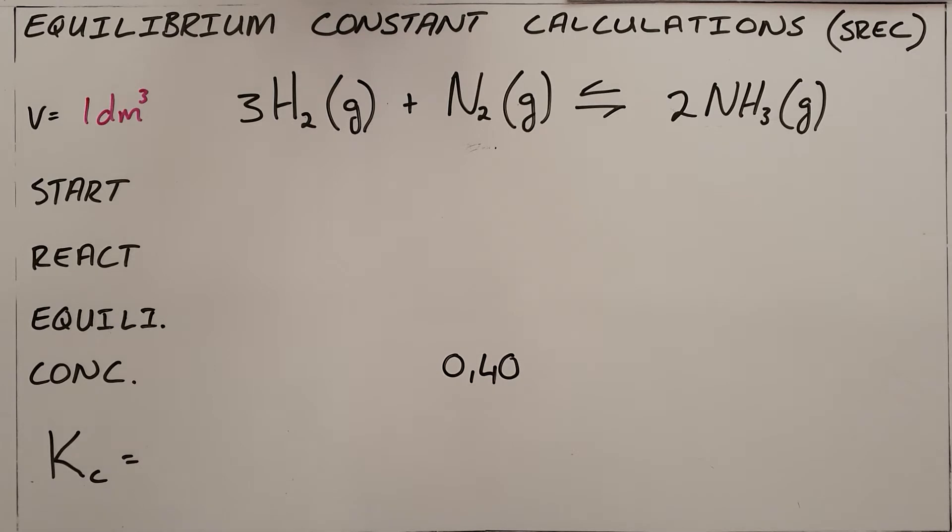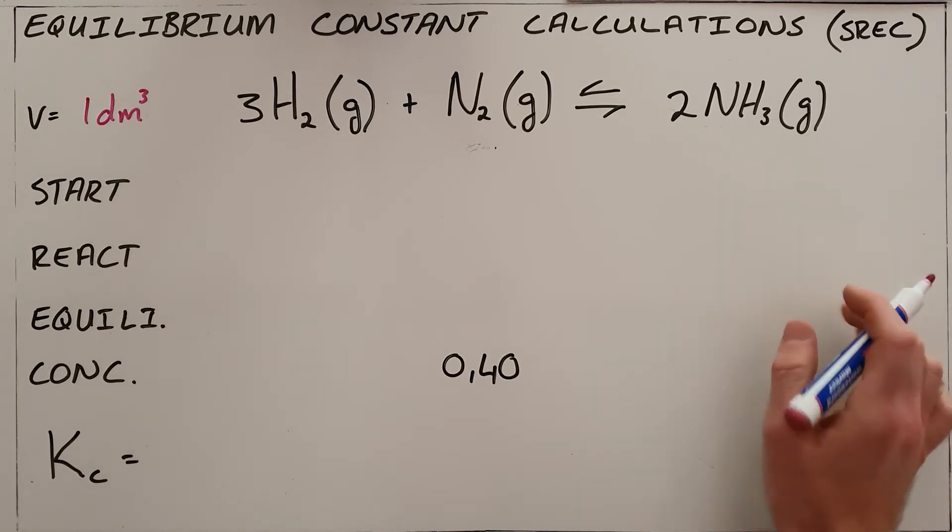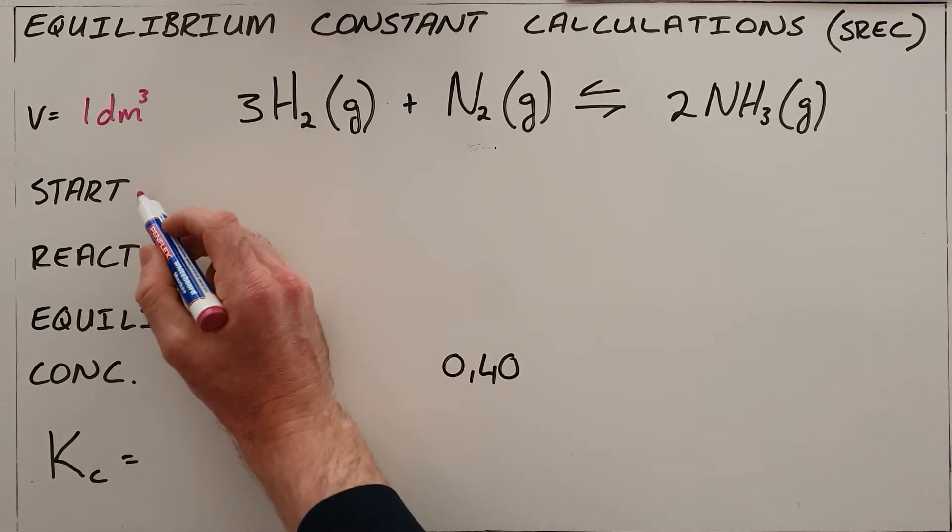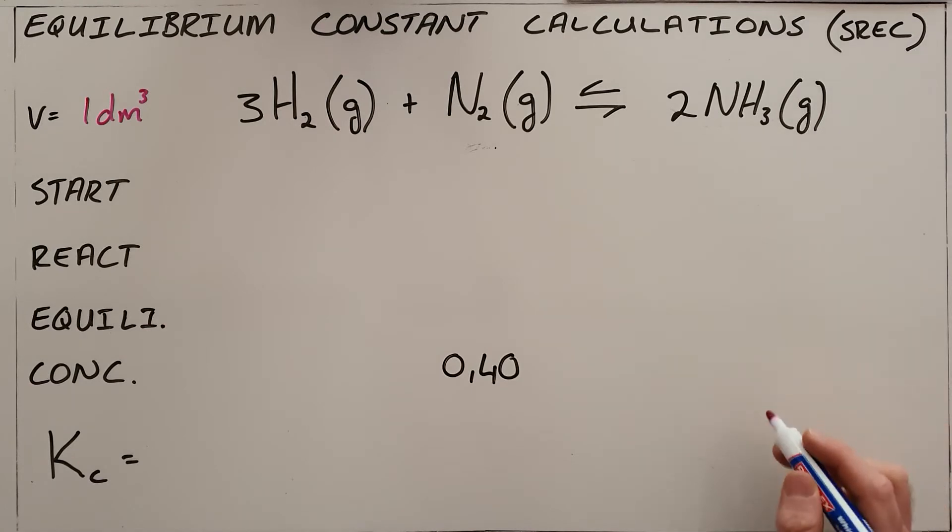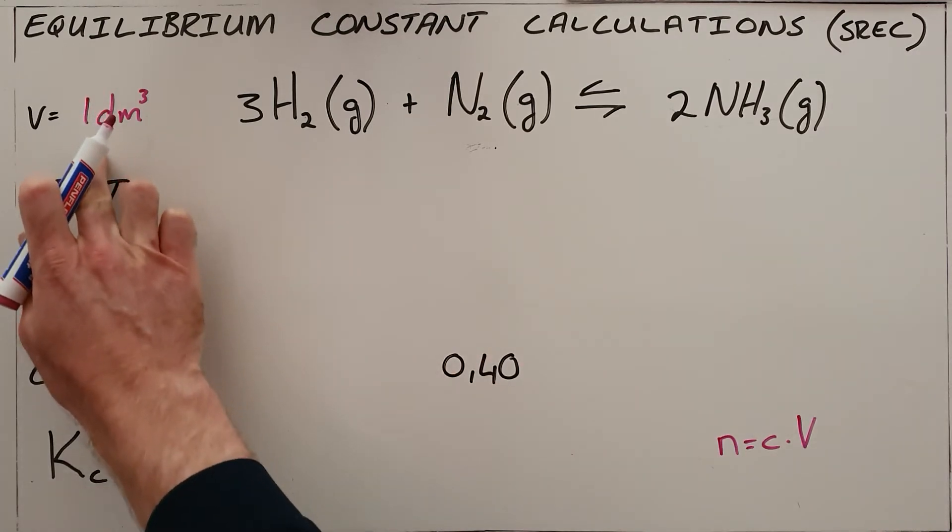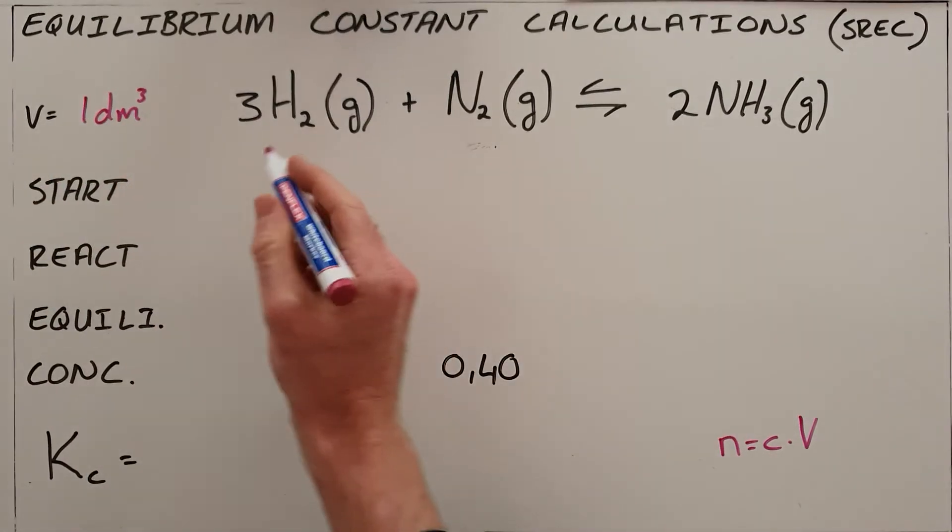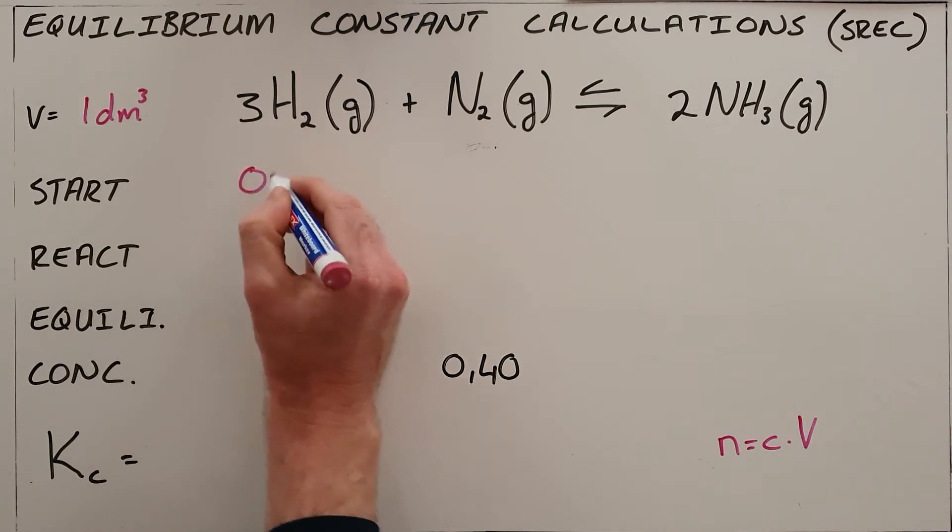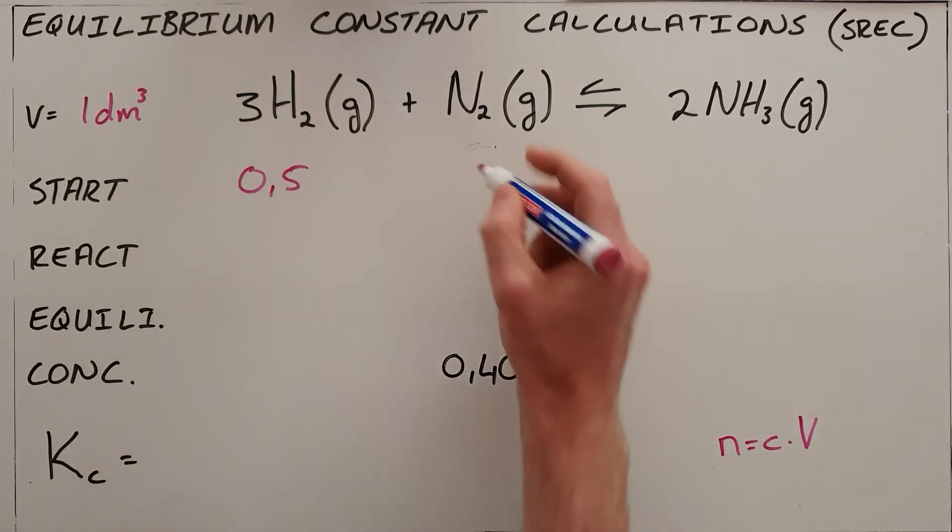Then this question reads: at a certain temperature, solutions of nitrogen, hydrogen, and ammonia, each with concentrations of 0.5 molar, are placed in a sealed container. What that tells us is that since the concentration is 0.5 molar and we know that number of moles is equal to concentration times volume, and since we've selected an easy volume, we can directly convert those initial values to numbers of moles.